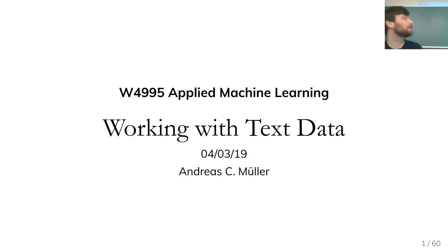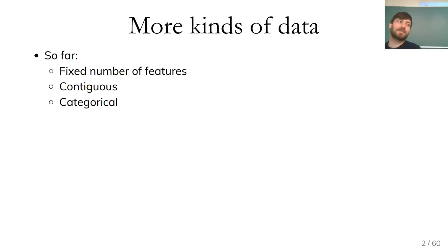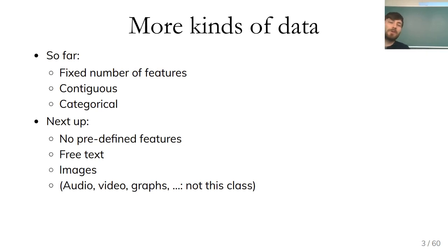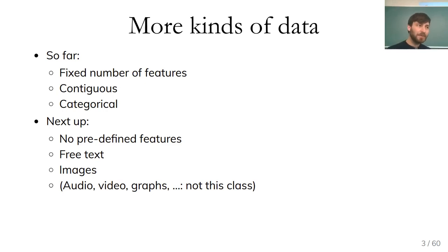Today we'll talk about working with text data. As already announced last time, this is the start of talking about different kinds of data. So far we had a fixed number of features — continuous and categorical — with a fixed-length representation for each data point. Next we'll talk about things where there's not a predefined notion of features: in particular, free text, images, and time series. Other cases are audio, video, and graphs, but I will not talk about those.